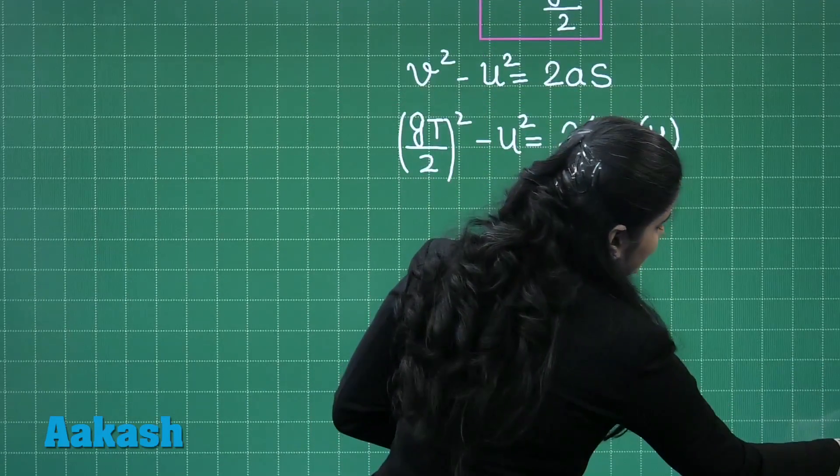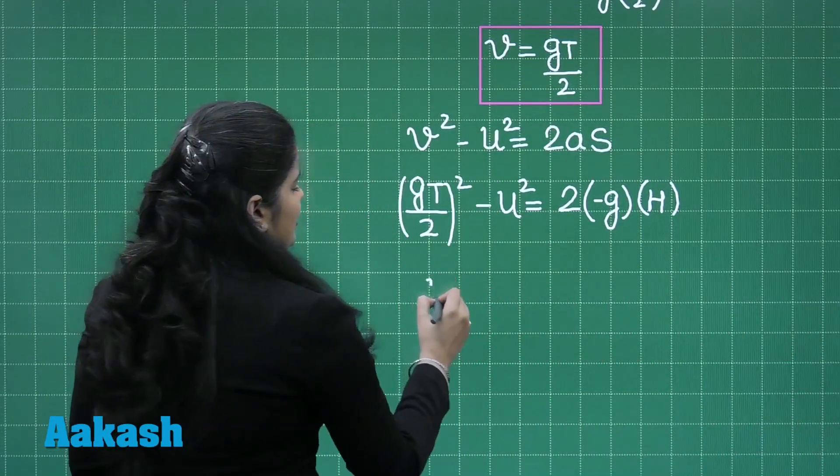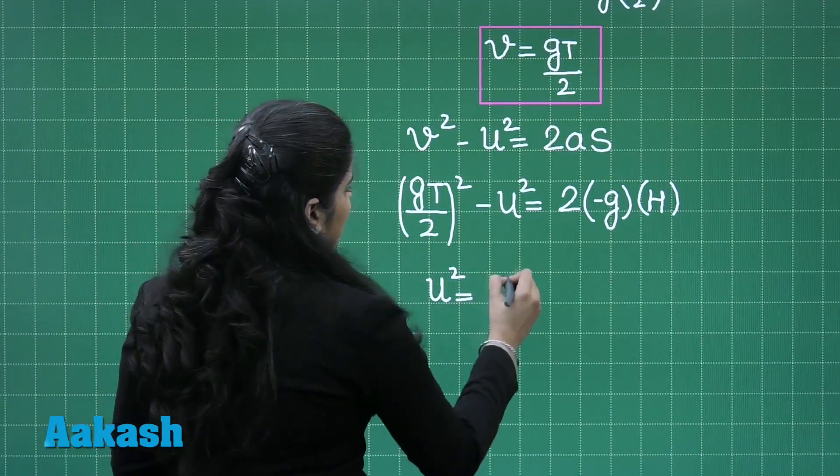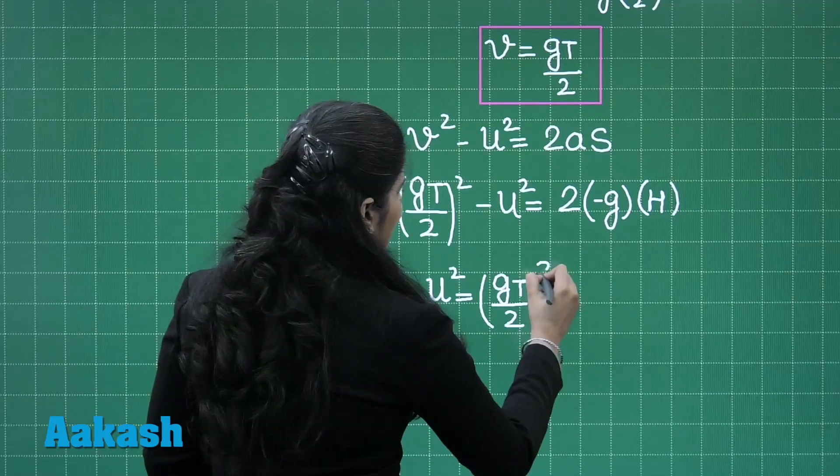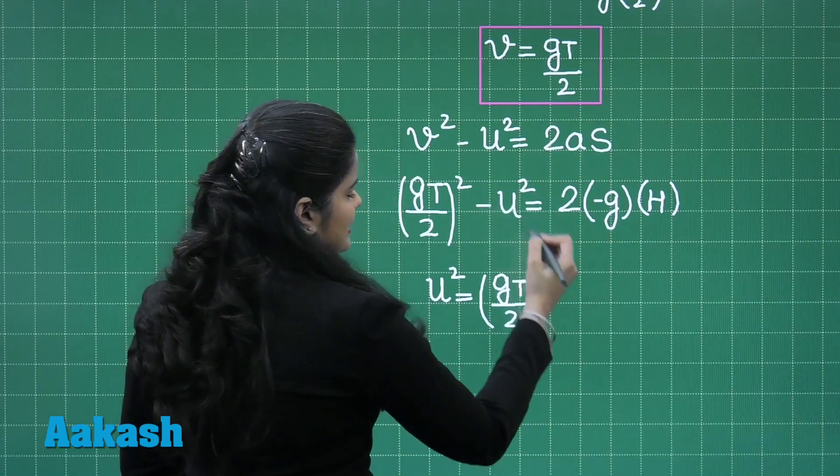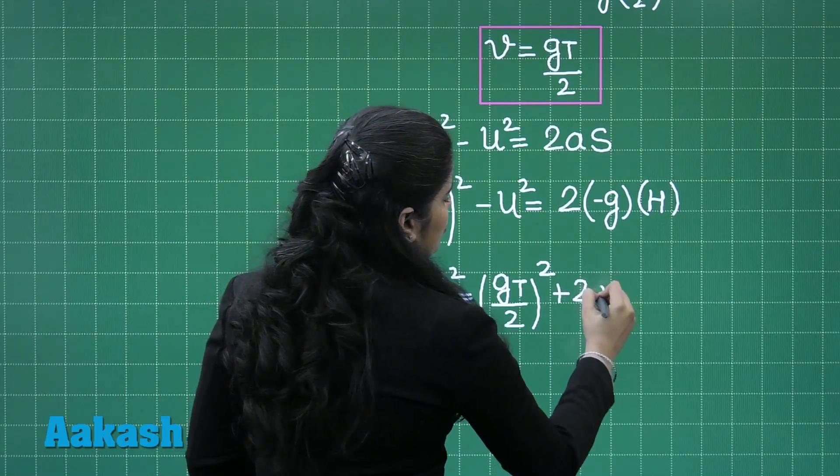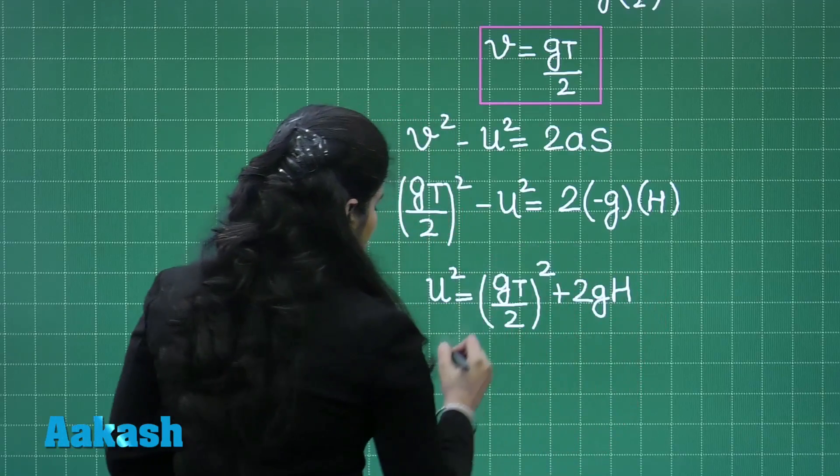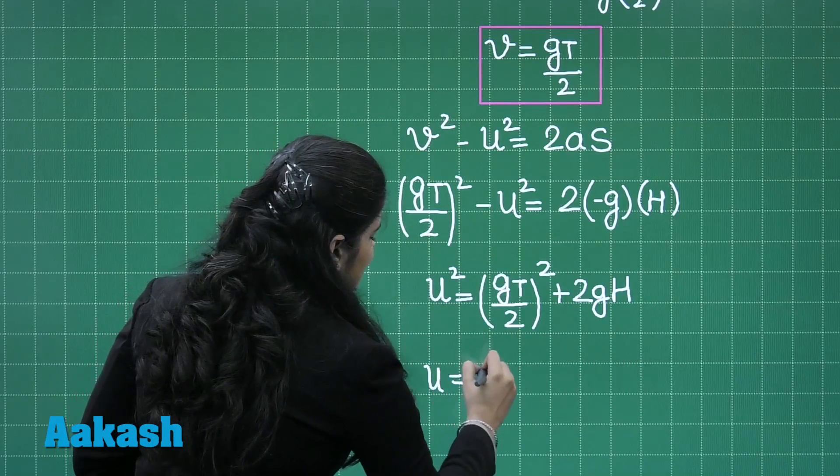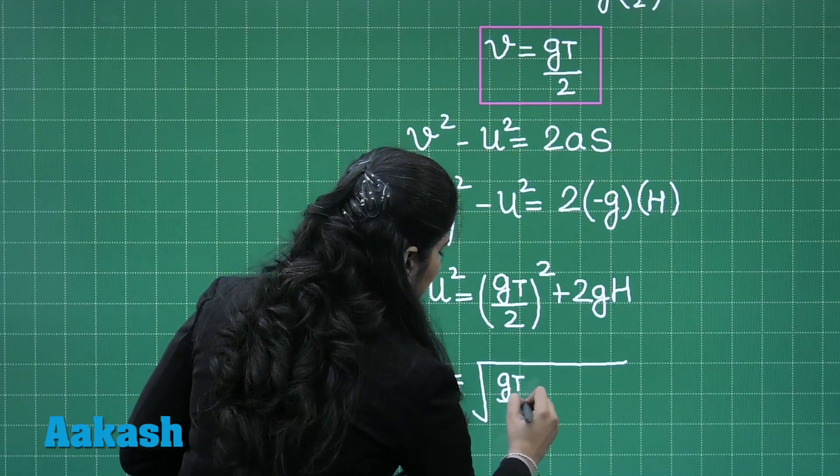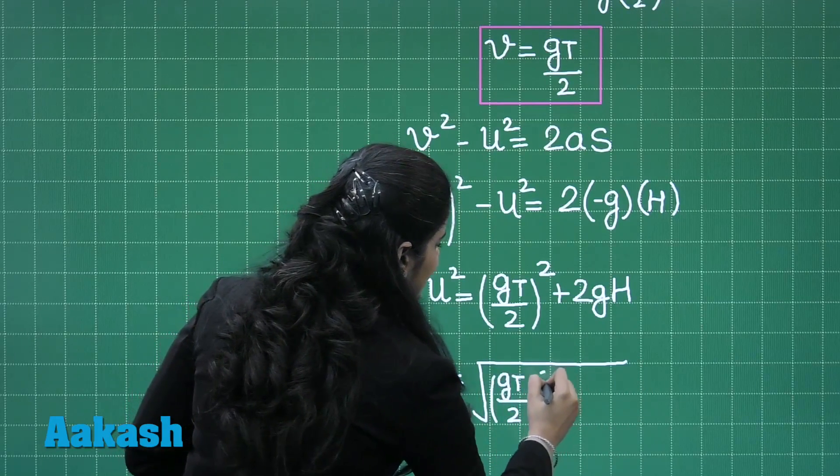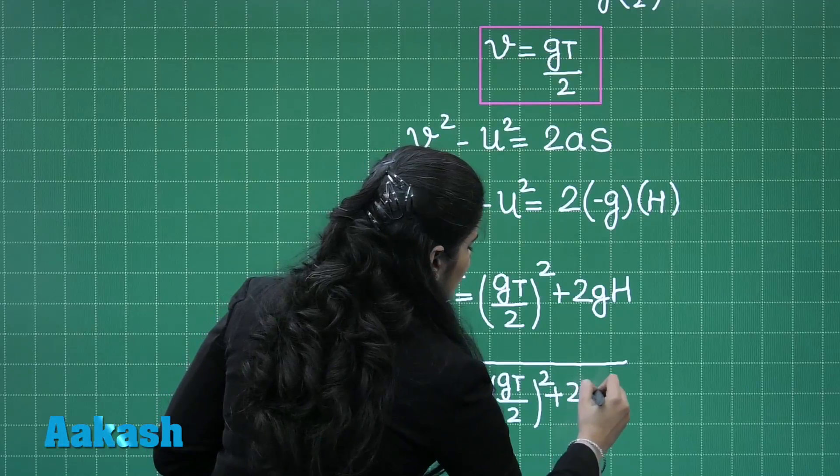Further I can write that this U square will be GT by 2 whole square and when this will come to this side it will become positive, so it will be 2GH. So U will be written as the square root of GT by 2 whole square plus 2GH.